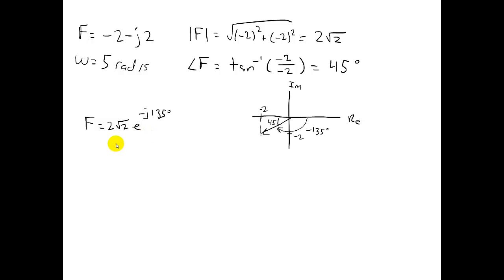Now, using general form, we can write F of t as 2 root 2 cosine. Now, in this case, be careful. Since the frequency was given, we're not going to use omega t. We're going to use 5t minus 135 degrees.